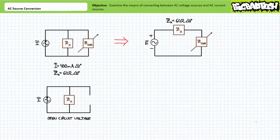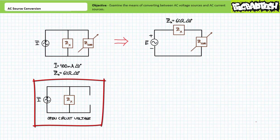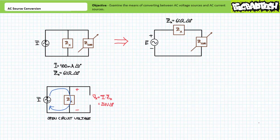Are you tracking so far? To determine the value of the equivalent voltage source, one must solve for the open circuit voltage. With the load impedance removed, the open circuit voltage will be the voltage across the fixed parallel impedance with all current traveling through it. An application of Ohm's Law demonstrates this is a value of 24 volts at an angle of zero degrees. Our equivalent source configuration is therefore a 24 volt at an angle of zero degree voltage source in series with a fixed impedance of 60 ohms at an angle of zero degrees.